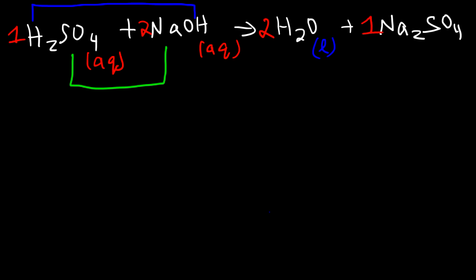Sodium sulfate is it soluble or insoluble? All of the alkali metals found in group 1 are soluble. So this is an aqueous phase. So now we can write the total ionic equation. So keep in mind in order to do this everything that's in the aqueous phase we need to separate into ions. So let's start with sulfuric acid.